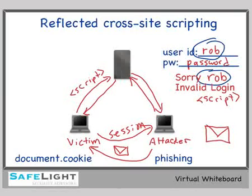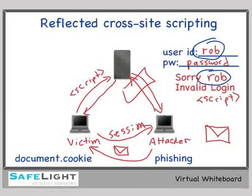Reflected cross-site scripting is a pretty simple problem to fix. It occurs because there's no input validation filter coming into the application, and likewise, there's no output standardization filter coming back out. By implementing these simple controls, this problem goes away. Let's head over to our hackers bank application so we can see a real-world example of this.